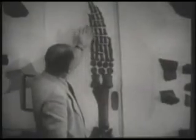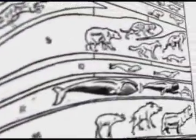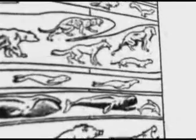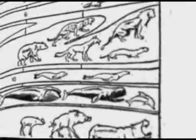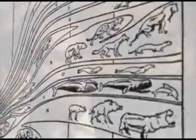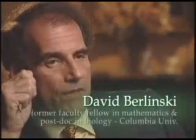Homology was something that biologists discovered long before Darwin. Aristotle knew about homology. The real question about homology is, how do we explain it? There are plenty of examples of homological structures in biology which are obviously not based on common descent.